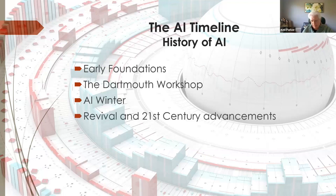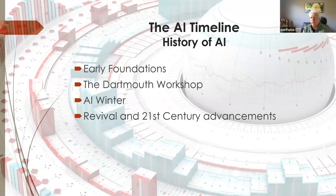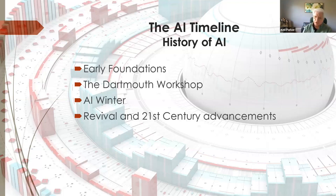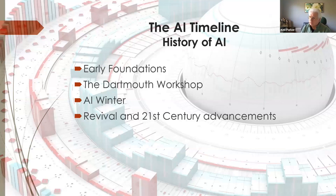It wasn't until probably the 1990s to present that we had machines powerful enough and the rise of the internet to handle large pieces of information. Because of some AI winters and people being disenfranchised with where AI was going, the money wasn't there. But then they started using statistical analysis and changed the name — they called it 'deep learning.' And everybody went, 'Oh, this is something new!' and put more money in.